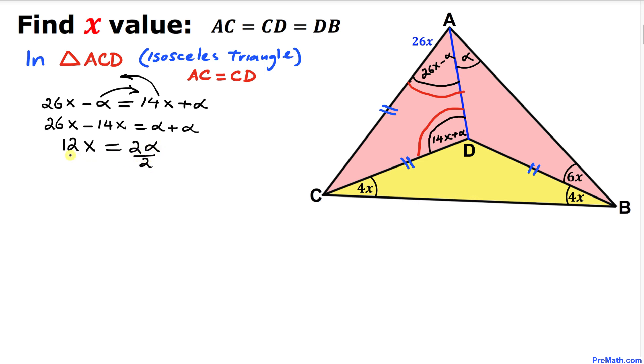Let's divide both sides by 2. So alpha turns out to be 6X. And now we can see that this angle alpha, we know that alpha is 6X. So I can write this alpha equal to 6X.